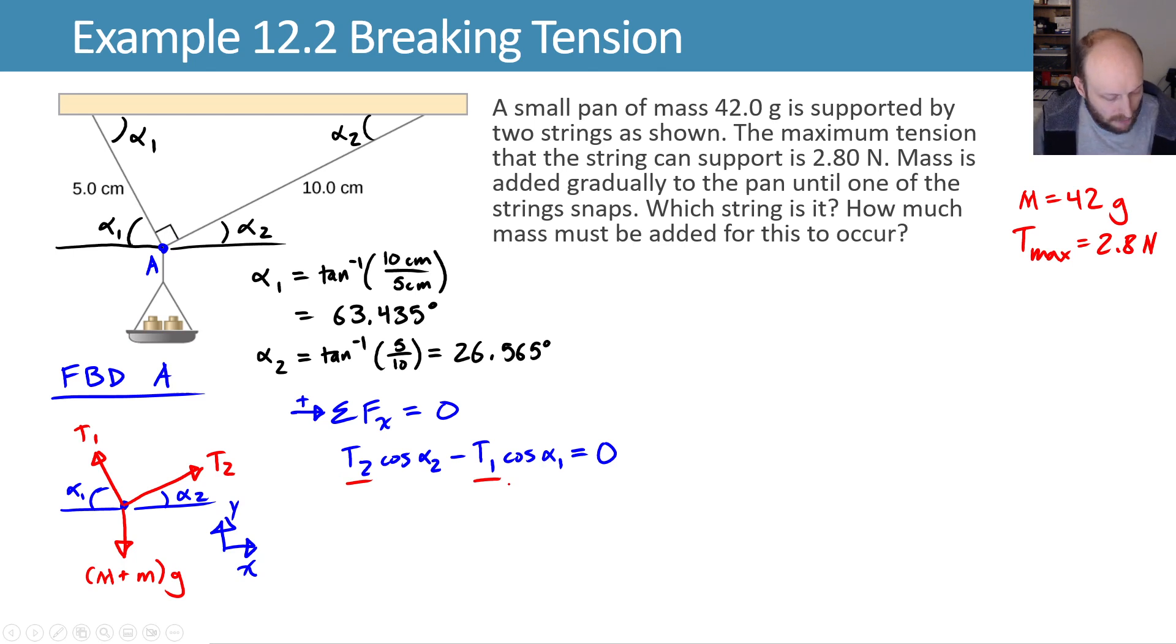We need another equation. Let's try writing a y expression. Sums of the forces in the y, where this is up, is equal to 0. This gives us t1 times sine of alpha 1 plus t2 times sine of alpha 2 minus my weight m plus m times g has to sum to 0.